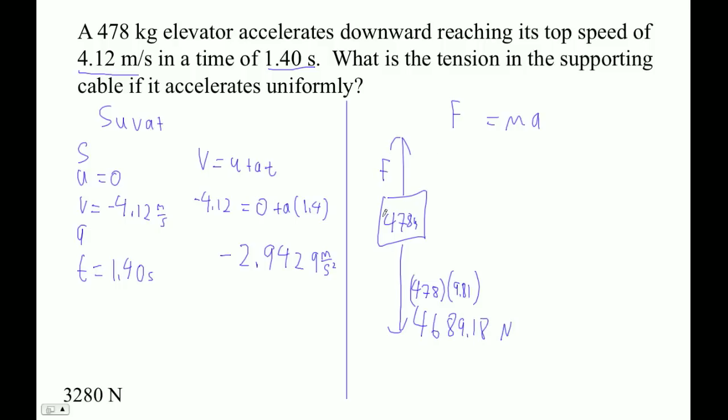And then here's the unknown force that we're trying to find. This guy's going to be a negative force. And then we just set up our F equals MA. Force minus 4,689 equals 478 times this acceleration here. It's a negative 2.9429.